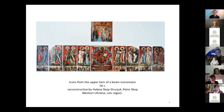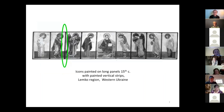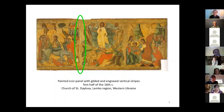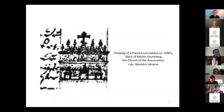This early beam iconostasis of the 15th to the first half of the 16th century had icons in the upper tiers painted on long boards, with individual religious narratives separated by painted or engraved vertical stripes. In contrast, framed iconostasis with individual painted icons probably existed by the end of the 16th century, as documented by a drawing found in the personal diary of Martin Gruneweg from the 1580s, depicting the Church of the Assumption in Lviv in western Ukraine.